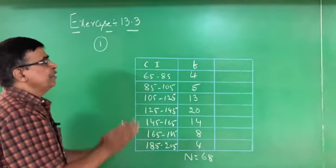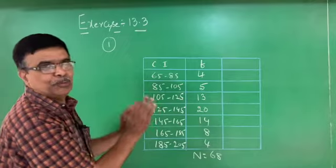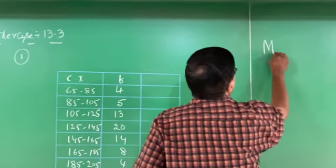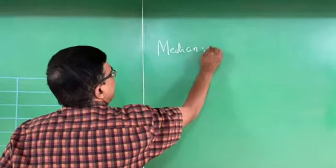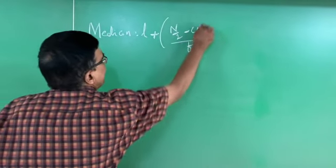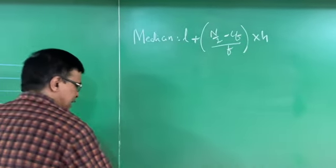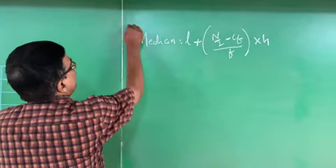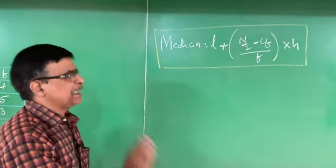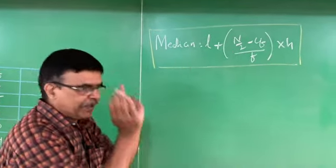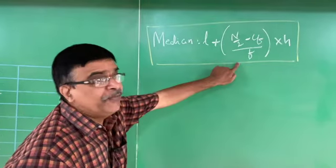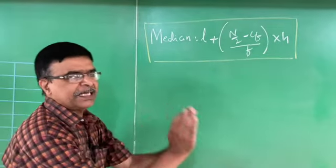For this grouped data, to calculate the median, the formula is: Median = L + [(N/2 − CF) / F] × H. Here, L is the lower limit of the median class, N is the total number of frequencies, CF is the cumulative frequency of the class preceding the median class, F is the frequency of the median class, and H is the size of the class interval.